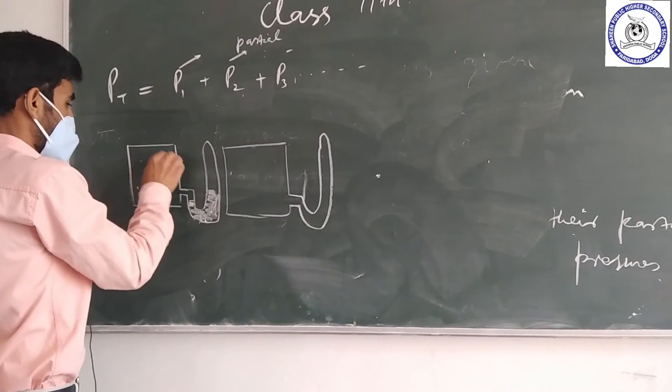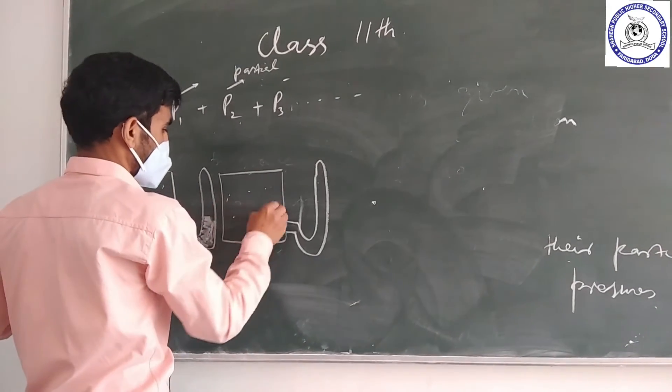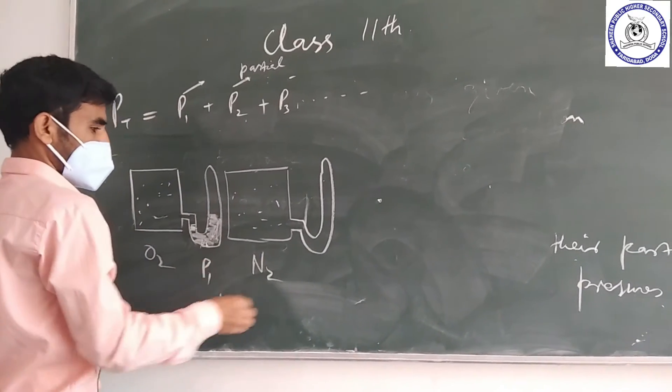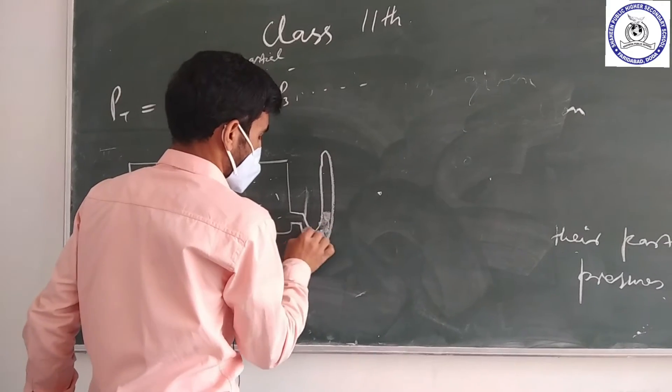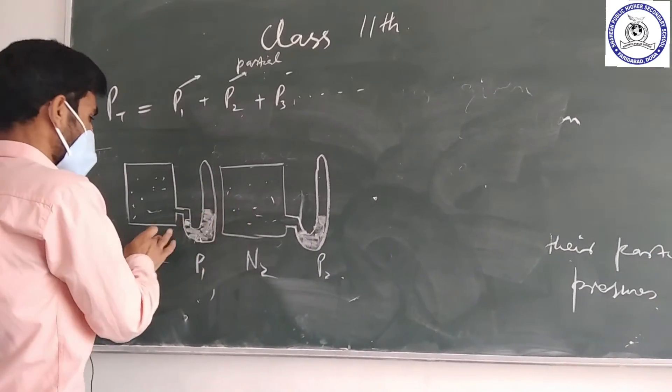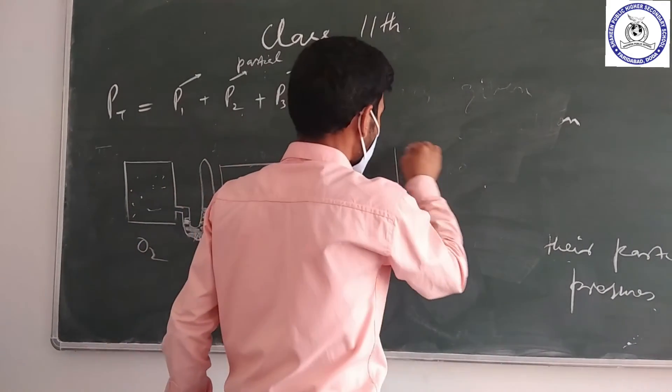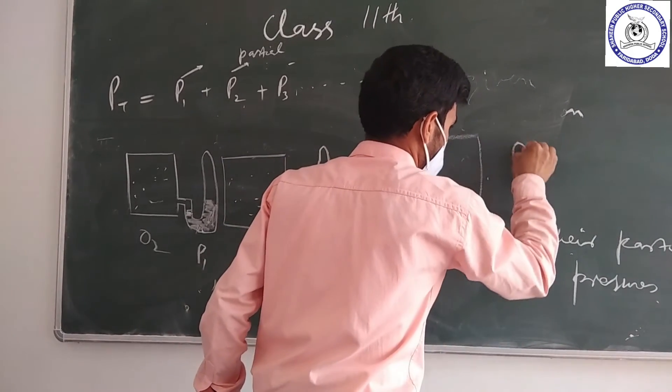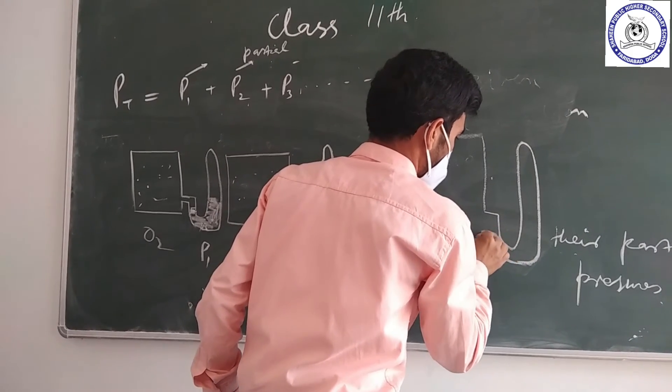This is oxygen gas and this is nitrogen gas. This pressure is P1 and this pressure is P2. If both the two gases are enclosed in a single container, then what is the pressure?